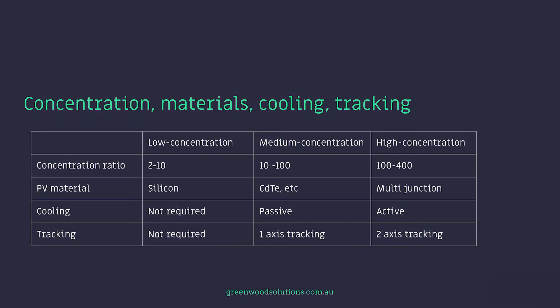Here we have a table showing concentration levels, materials, and whether they require cooling or tracking. For low concentration, the concentration ratio is 2 to 10, using silicon like a standard panel — cooling and tracking are not required. For medium concentration, the ratio is 10 to 100, using different materials such as cadmium telluride; cooling is generally passive and tracking is single-axis, probably east-to-west. For high concentration, the ratio is 100 to 400 times; the PV material is multi-junction — much more expensive — cooling is active, and two-axis tracking east-west and north-south is required.